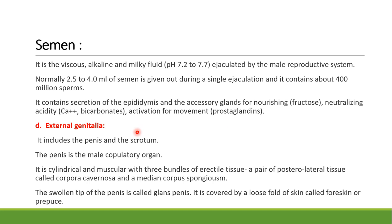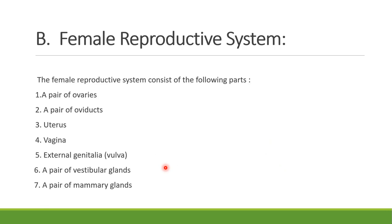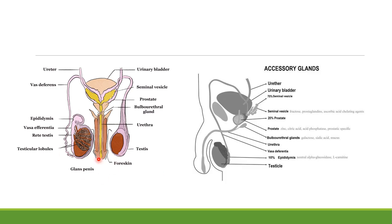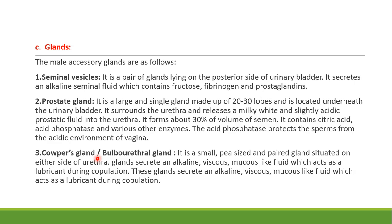The external genitalia includes the penis and the scrotum. The penis is the male copulatory organ, made up of special erectile tissue that helps in erection during insemination. The distal part of the penis is enlarged and called the glans penis, and it is covered by a loose fold of skin called the foreskin.